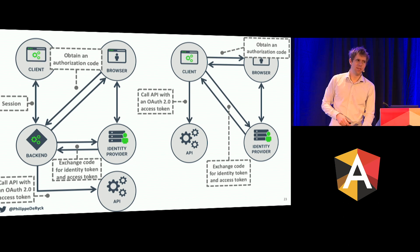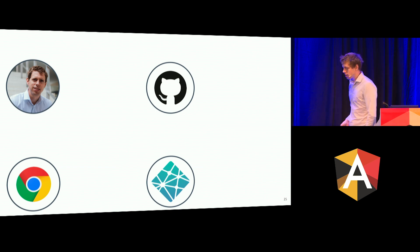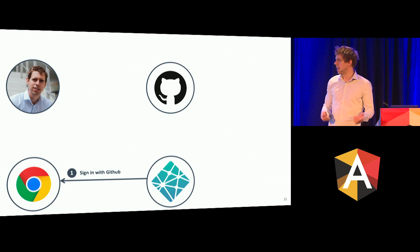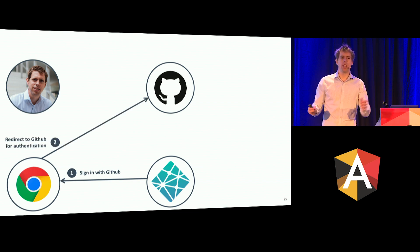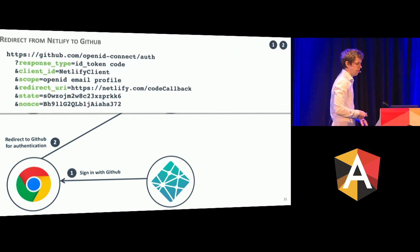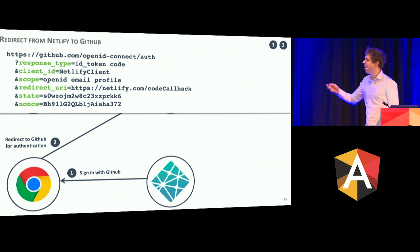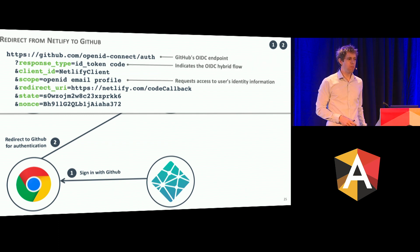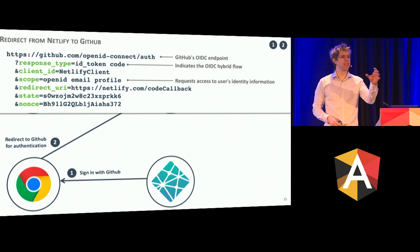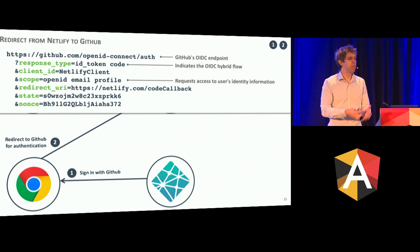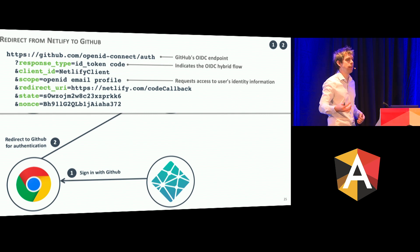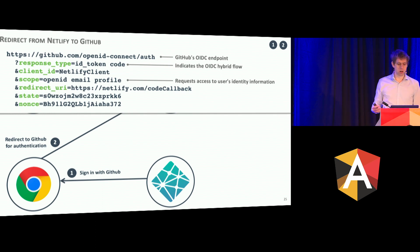Let's talk about the dirty details — how does this work in practice? High-level schematics are fine until you have to implement it. Let's take the Netlify backend system trying to get access to GitHub. Here's how you do that in practice. We had the redirect — "sign in with GitHub" going to GitHub. In practice, the URL to go there has a couple of interesting things. The response type indicates what type of flow you're running: "id_token" means I expect an identity token — I'm running an OpenID Connect flow and expect information about the user's authentication. The "code" part means I also expect an authorization code so I can get access tokens later.